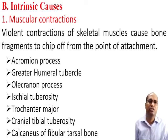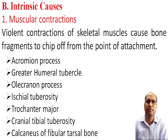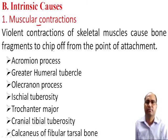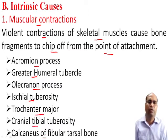The second cause type is intrinsic causes — factors present inside the animal's body. Intrinsic causes are divided into two major categories: muscular contractions and pathological fractures. Violent contractions of skeletal muscle cause the bone fragment to chip off from the point of attachment. This type of fracture is very common at the olecranon, greater humeral tubercle, tibial tuberosity, trochanter major, deltoid tuberosity, calcaneus, and fibular tarsal bone.